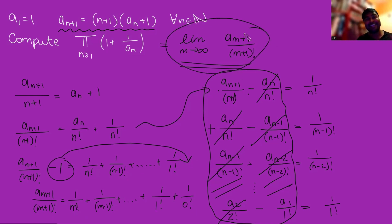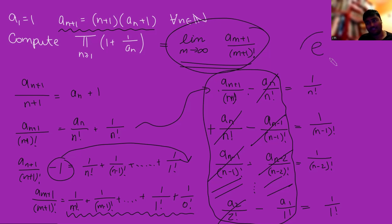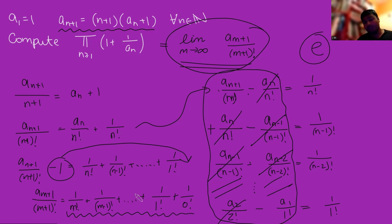We now take the limit as m goes to infinity. The right-hand side is the sum of 1/k! for k from 0 to infinity, which approaches e — by definition of the Taylor series expansion of e^x evaluated at x=1. So the infinite product from n=1 to infinity of 1 + 1/a_n equals e.